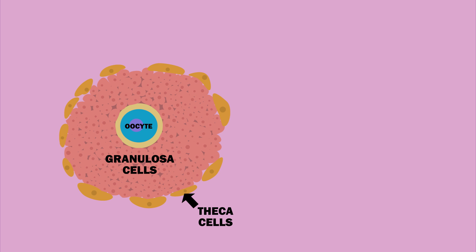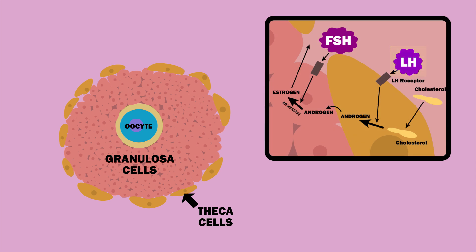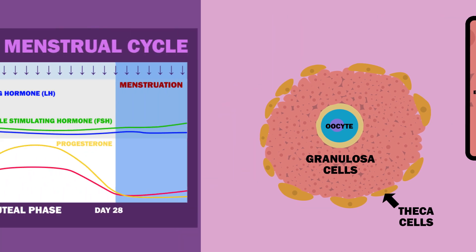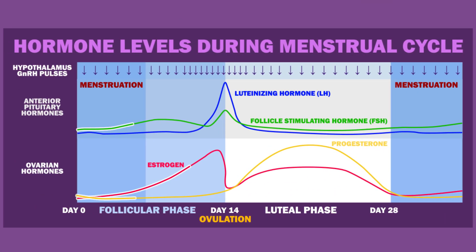The follicle has granulosa and theca cells surrounding the oocyte. These cells cooperate to produce estrogen: LH stimulates theca cells to produce androgens, which then get converted to estrogen in granulosa cells by the enzyme aromatase in response to signals from FSH. Estrogen levels rise as the follicle matures because there are more and more granulosa cells, though the amount produced by each cell remains the same. This estrogen inhibits production of FSH and stimulates development of the endometrium. Less FSH means a more androgenic microenvironment within follicles adjacent to the dominant one. The estrogen also maintains rapid GnRH pulsatility in the late follicular phase.